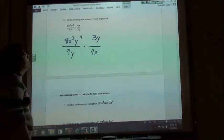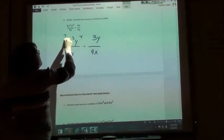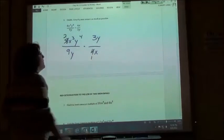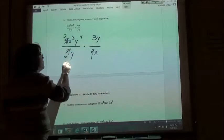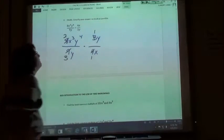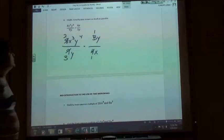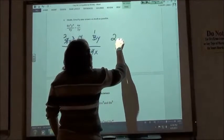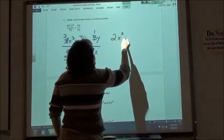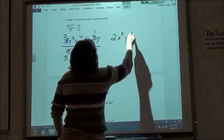Okay. Let's pull the 8 to a 2, and the 4 to a 1, the 9 to a 3, and the 3 to a 1. Okay. So, we have 2x to the 3rd, y to the 5th.